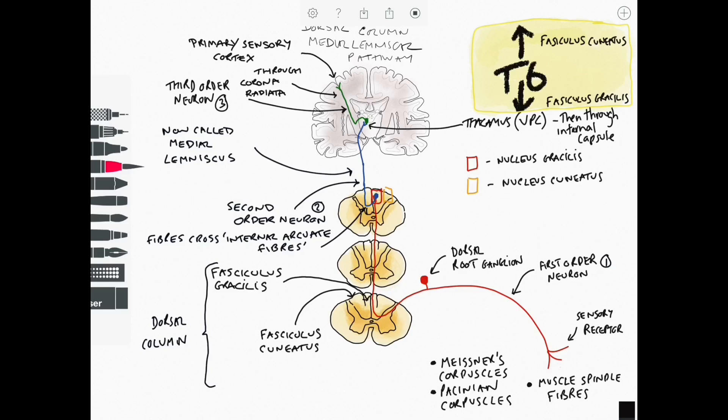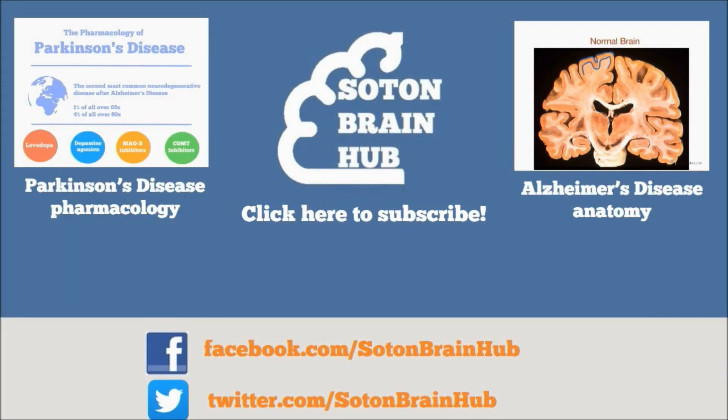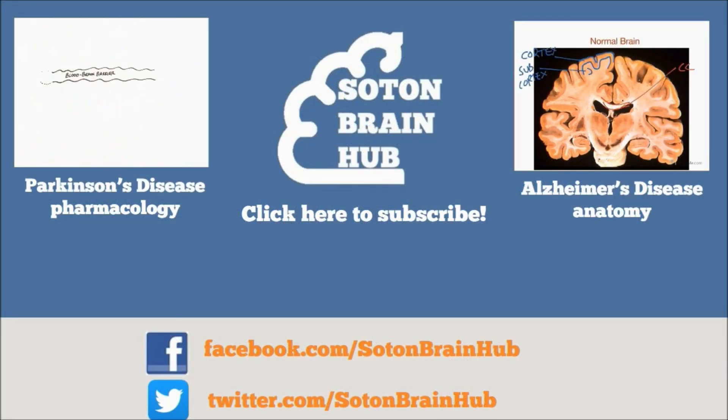in terms of lesions if we get a lesion at the first order neuron then we have ipsilateral problems the difference here between this and the spinothalamic pathway is that a lesion of the spinal cord here will lead to ipsilateral problems subscribe to Sultan Brain Hub for more videos to help explain the mysteries of the brain